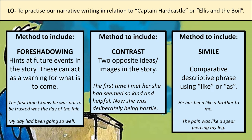The techniques I'd like you to include — first, foreshadowing. Hopefully you know fully what foreshadowing is at this point. Foreshadowing is when we hint at future events in a story — these can act as a warning for what is to come. For example: 'The first time I knew he was not to be trusted was the day of the fair.' Or: 'My day had been going so well.' — past tense, so we know it's not going well anymore. These hints suggest something bad is going to happen later on. Think about the foreshadowing in your story that hints at future events — maybe somebody treats somebody else unfairly but it's something small, then later treats your main character very unfairly in a bigger way.